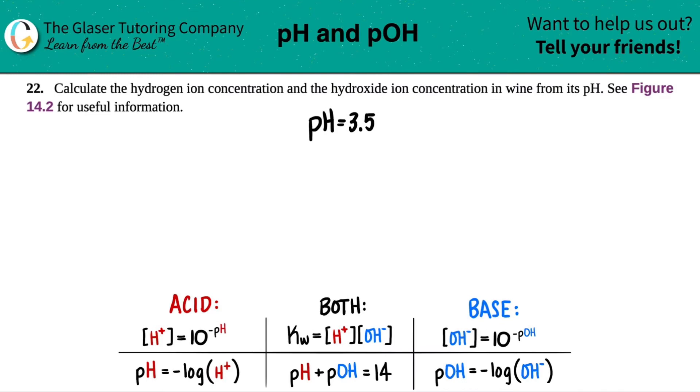Number 22. Calculate the hydrogen ion concentration and the hydroxide ion concentration in wine from its pH. See figure 14.2 for useful information.